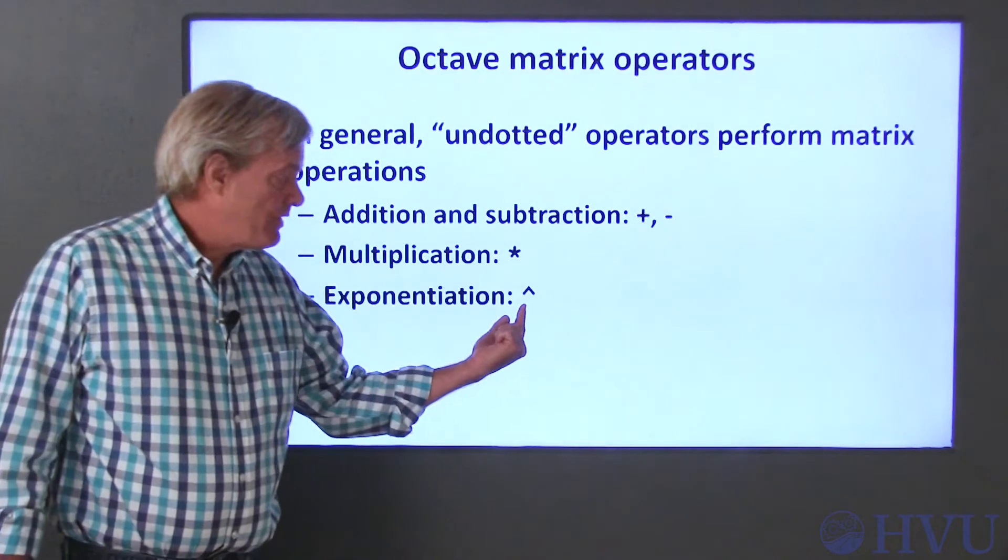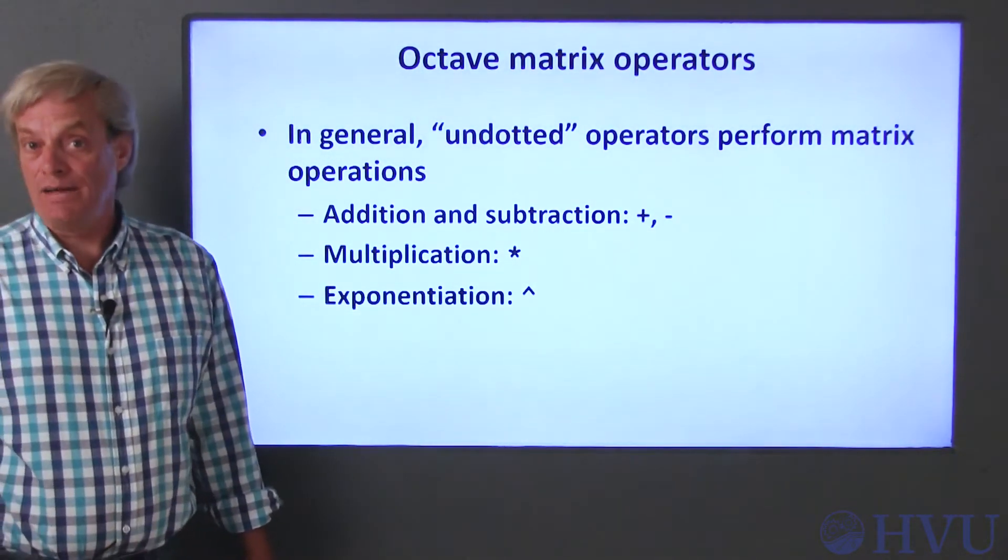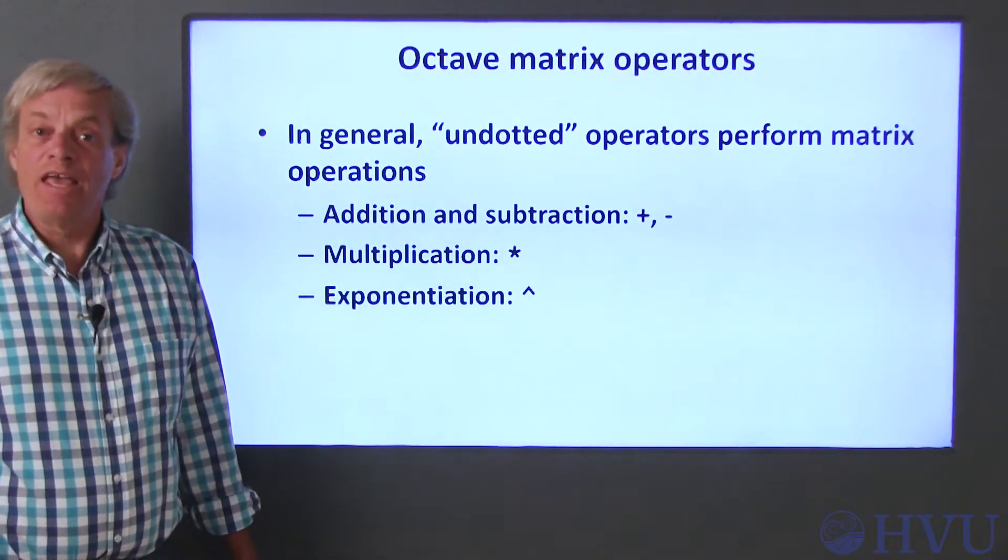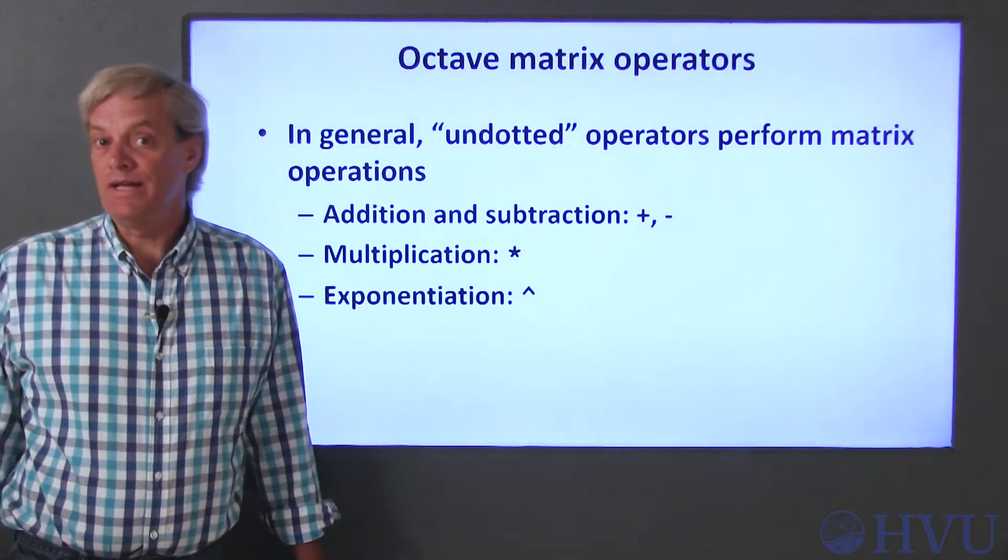Exponentiation is done with a caret symbol. This operation multiplies a matrix times itself, the number of times specified by the exponent. So, the result of A cubed results in A being matrix multiplied by itself three times.